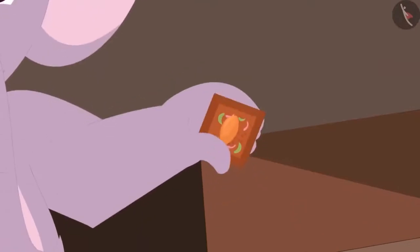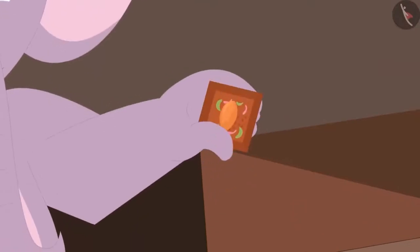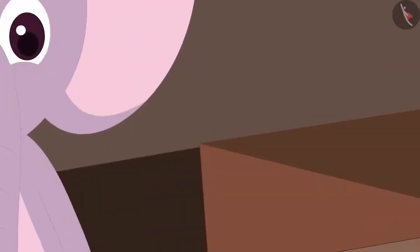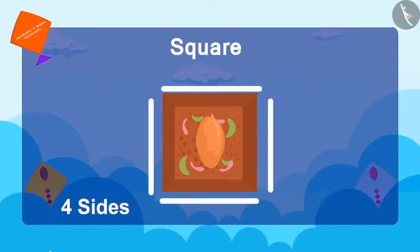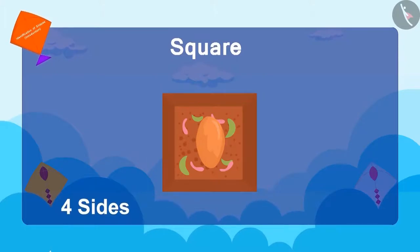Now finally, Appu showed Chanda a piece of walnut chiki of this shape. Children, what shape is it? This is a square. It has four sides. Do you know a unique thing about the square? All its sides are of equal length.